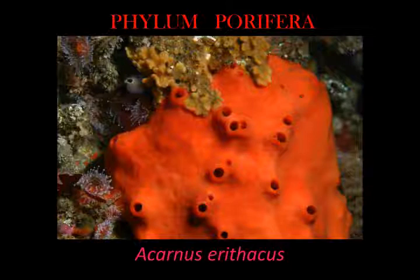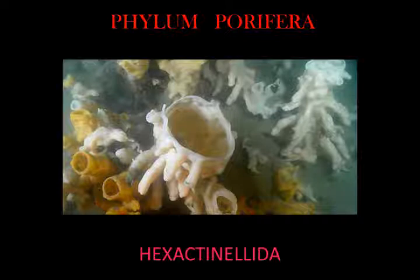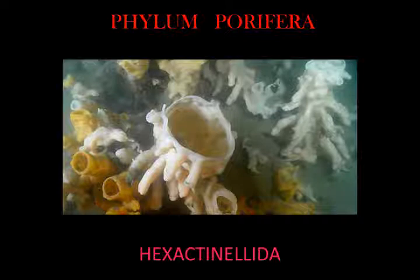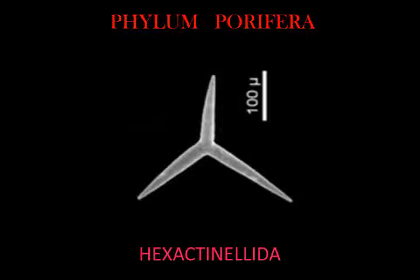Hexactinellida, or glass sponges, are exclusively marine and mainly restricted to hard and soft substrates in deeper waters of 200 to 6,000 meters, though they occasionally occur in shallower scuba-accessible waters such as submarine caves in the Mediterranean or off the coast of British Columbia, where they form massive structures analogous to Mesozoic sponge reefs. They are colorful and highly variable in body shape. Hexactinellids are distinct in that their soft tissues are largely syncytial and their siliceous spicules have triaxonic symmetry.